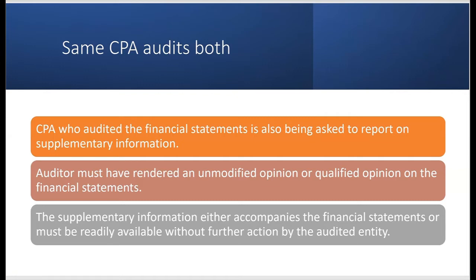The auditor must have rendered an unmodified or qualified opinion on the financial statements in order to be eligible to report on supplementary information. If the auditor rendered an adverse opinion or a disclaimer, you couldn't report on the supplementary information. It's similar to key audit matters — you can report on them with an unmodified or qualified opinion, but not with a disclaimer or adverse opinion. The same rule applies to supplementary information.